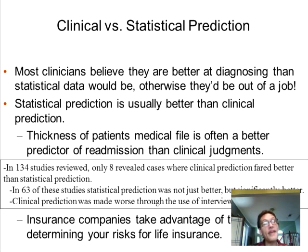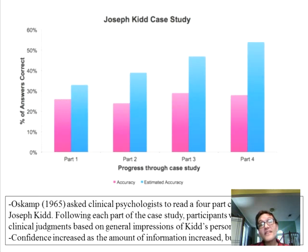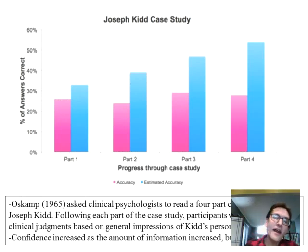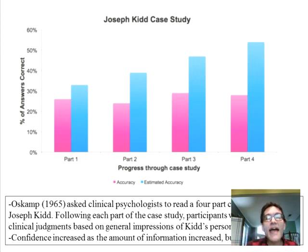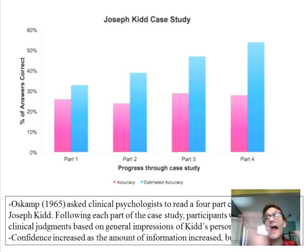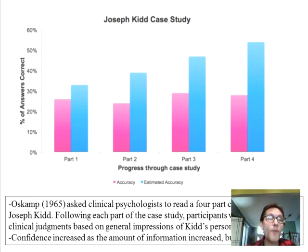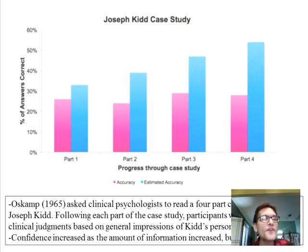Something as simple as the thickness of a patient's medical file does a better job than a trained clinician — which is a powerful finding. In a classic case called 'Joseph Kidd,' a case study was read in four parts, and after each part participants were asked for their diagnosis and their confidence level. As people received more information from parts one through four, there was very little change in accuracy — the purple bars — but confidence increased dramatically. They believed they were correct, but they weren't getting any better.